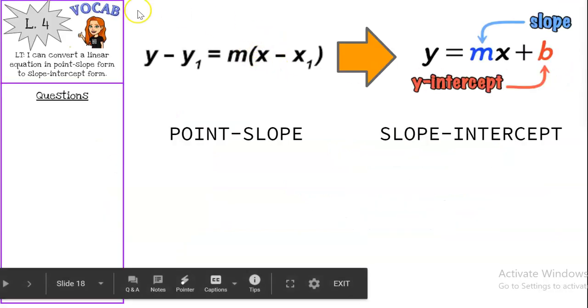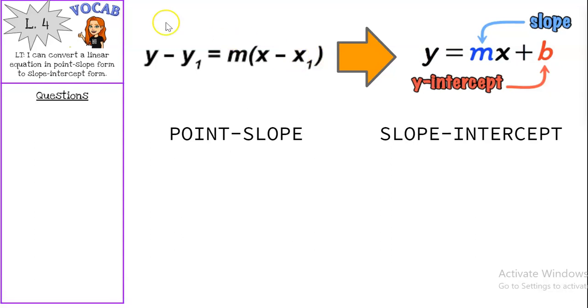So a reminder of our two forms, we have point-slope form, so we're going to take an equation that looks like this, and we're going to make it look like slope-intercept form, y equals mx plus b.